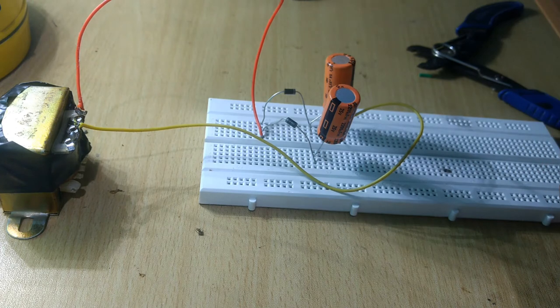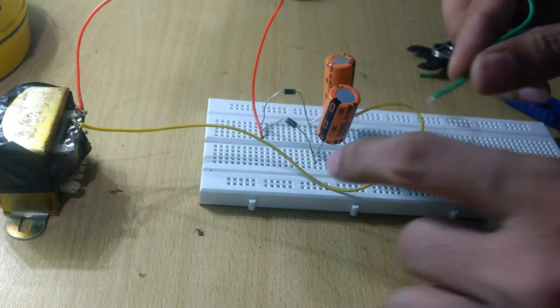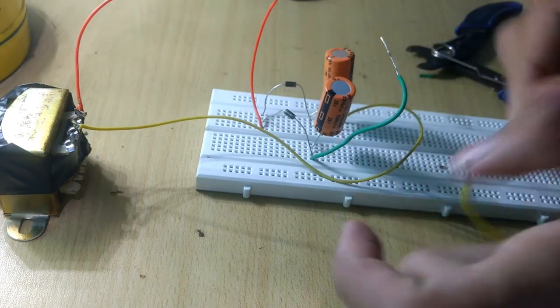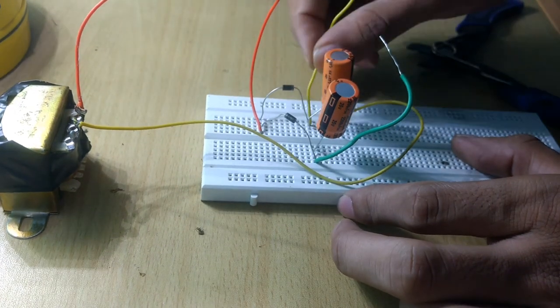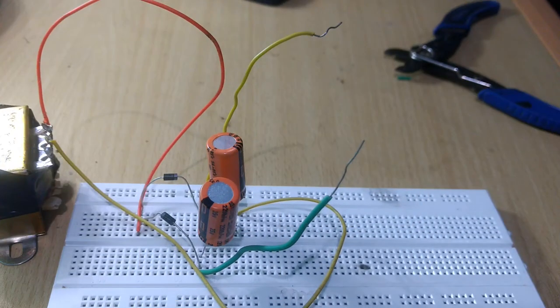So our circuit is now ready. Let us insert two wires at the DC output points.